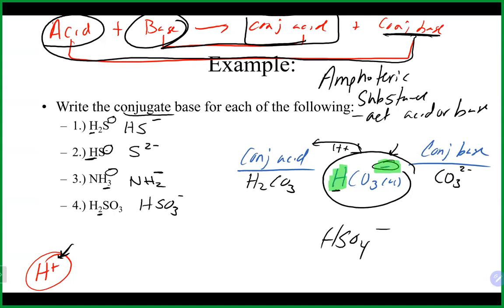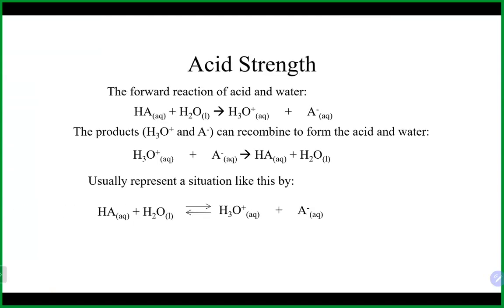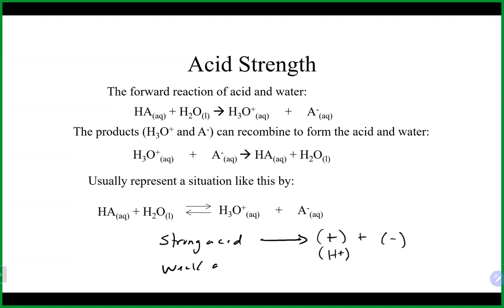Let's talk about acid strength. Strong acids have a one-way arrow — everybody breaks apart into ions, with H⁺ always the cation. Weak acids have reversible arrows. For example, HF (hydrofluoric acid) is a weak acid that breaks apart into H⁺ and F⁻ with reversible arrows. HCl is a strong acid that 100% breaks apart.